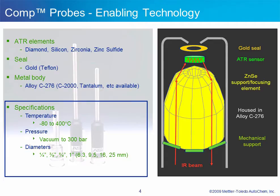The enabling technology of the COMP probe design is a fundamental factor in the success of the React-IR. The COMP probe was introduced in 1994 and has been used for over 15 years with thousands of probes in daily use at scientific institutions around the globe. The design has a zinc selenide focusing and support element that focuses the infrared energy into the ATR sensor. The zinc selenide element does not come in contact with the chemistry, as it is inside the metal housing of the probe. The only wetted materials are the standard alloy C276 metal housing, a gold seal, and the ATR sensor. The most universal and widely used ATR material is diamond.